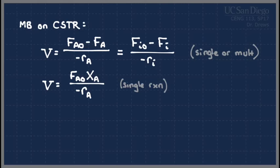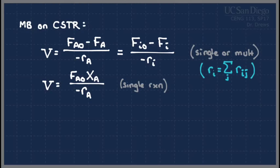If you have a multi-reaction system — just like plug flow, packed bed, or batch reactors — you still need a net rate. The net rate R_I is still equal to the sum over all reactions J of R_IJ. That part hasn't changed at all, and it never will change no matter what kind of reactor you have. If you have multiple reactions you always need a net rate term that looks just like that.